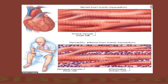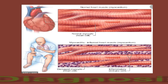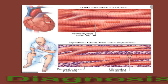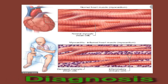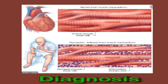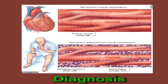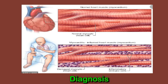A doctor can conclusively diagnose giant cell myocarditis with a heart biopsy. During this procedure, they use a needle to obtain a small sample of heart tissue and examine it under a microscope to identify the giant cells. However, giant cell myocarditis may mimic symptoms of other heart diseases and is also very rare, so it may not be the most likely explanation for a person's cardiac problems. For this reason, a doctor may order other tests, such as a blood test to detect troponin, whose presence in the blood can indicate heart damage.